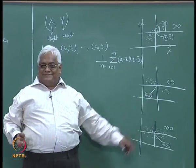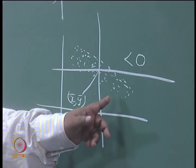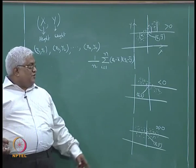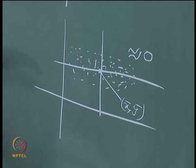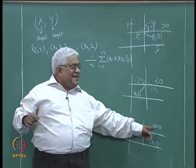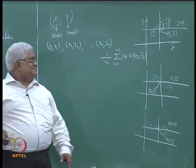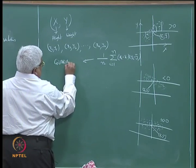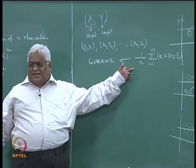In the second scatter plot, the points are in the second and fourth quadrants, so the product will be less than 0 — and this summation quantity will be less than 0. In the third scatter plot, points are roughly equally distributed across all quadrants, so this summation is likely to be very close to 0. This quantity is known as covariance.